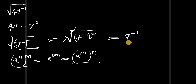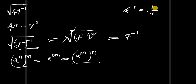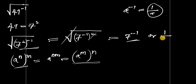We now have seven to the power of negative one. According to the identity a to the power of negative one equals one over a, our answer can be written as one over seven. This is the final answer. Thank you and goodbye.